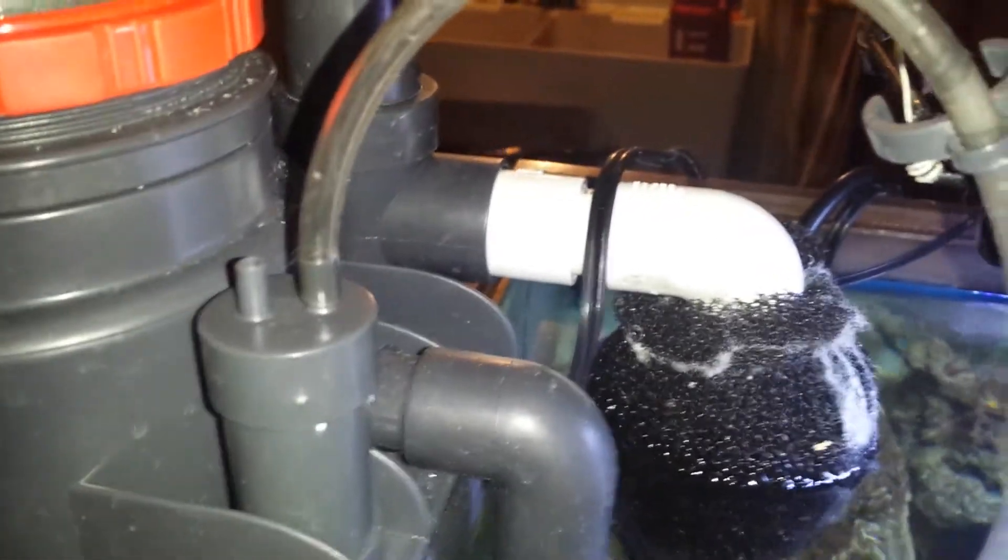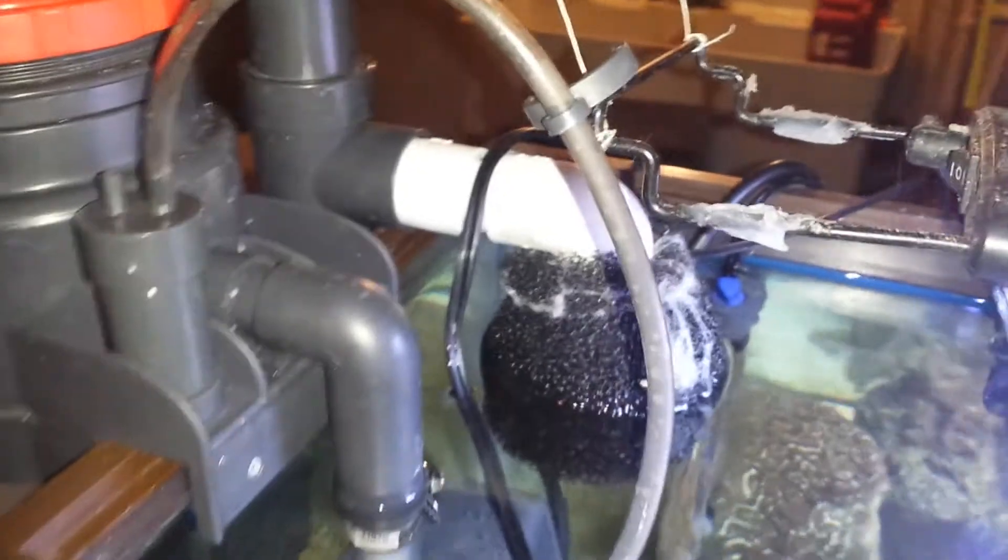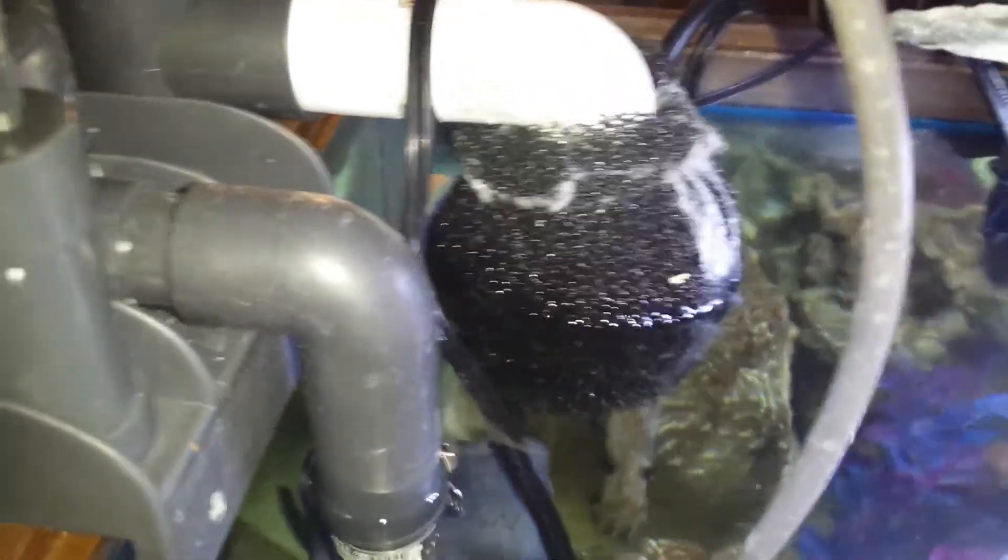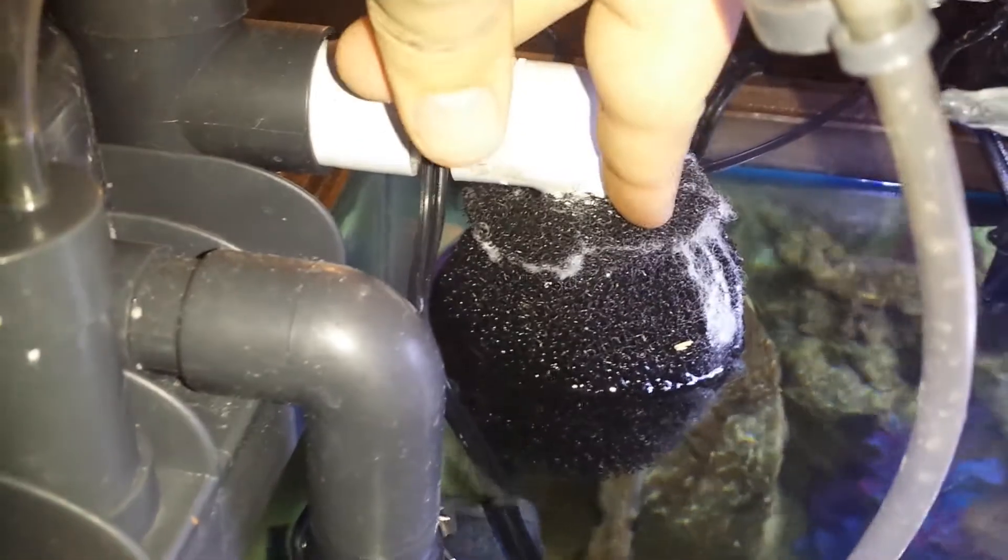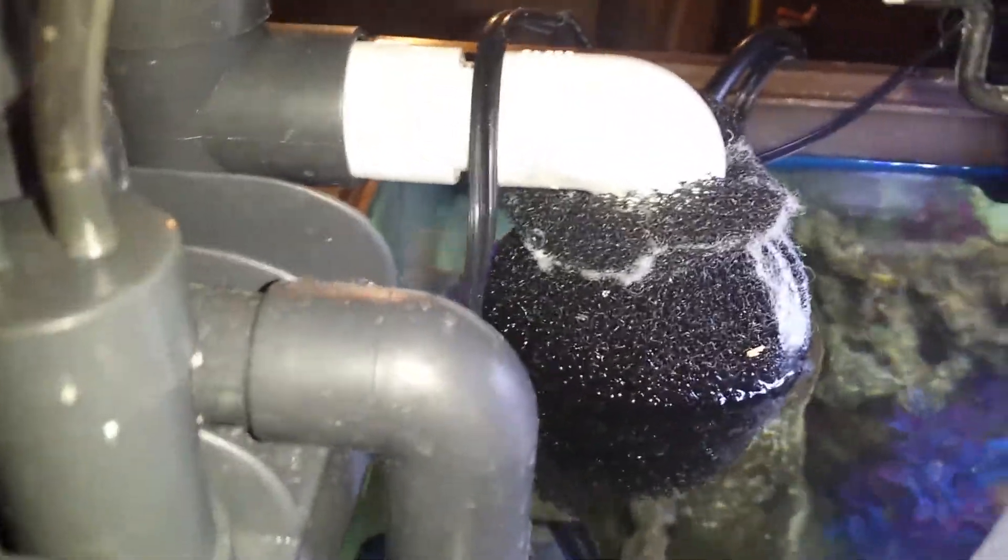So one quick modification that I did do was I put a 45 degree tubing right there. I got rid of that flex tube, because that was just a real pain for me. And then I kept this media right here. I kept that, but I just zip-tied it to the end of the 45.